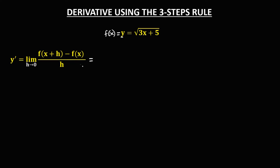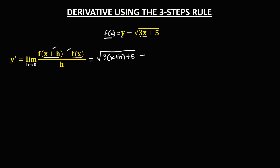To find the derivative, we have f of x plus h. So in the given, x becomes x plus h. We have the square root of 3 times (x plus h), then plus 5, minus f of x — and f of x is the given, which is the square root of 3x plus 5 — all over h.